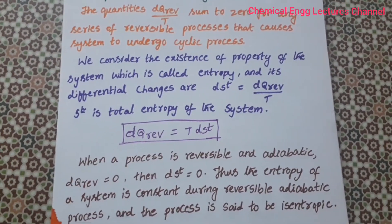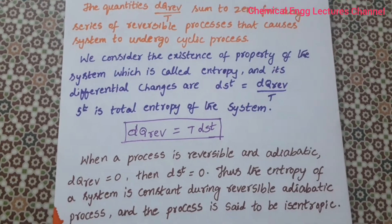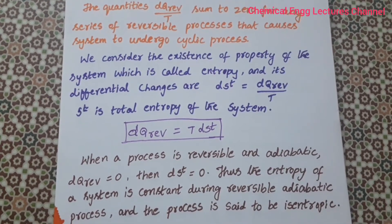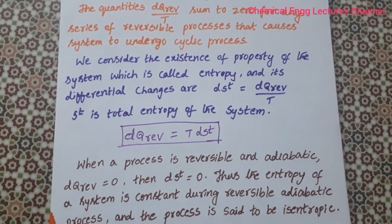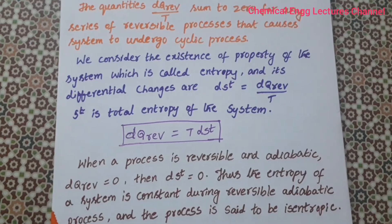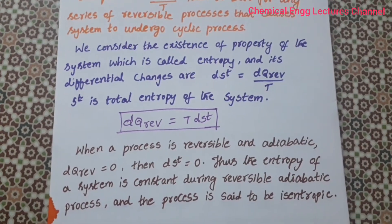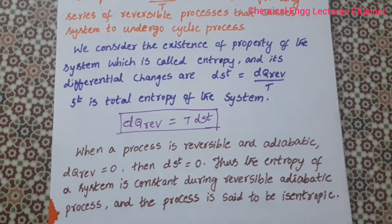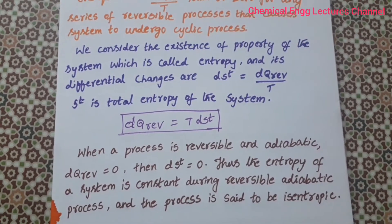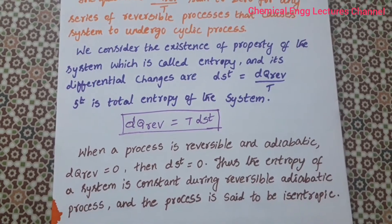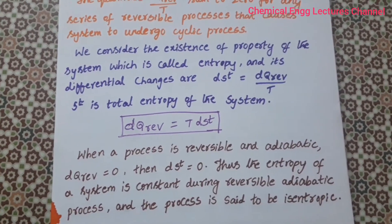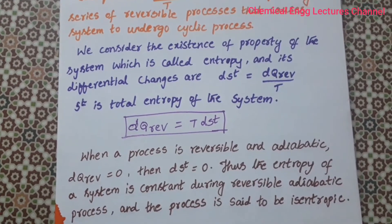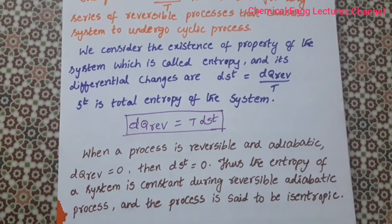When a process is reversible and adiabatic, DQ reversible is equal to 0, and therefore DST is equal to 0. The entropy of a system is constant during a reversible adiabatic process, and such a process is called an isentropic process. You can see the isentropic process illustrated here.